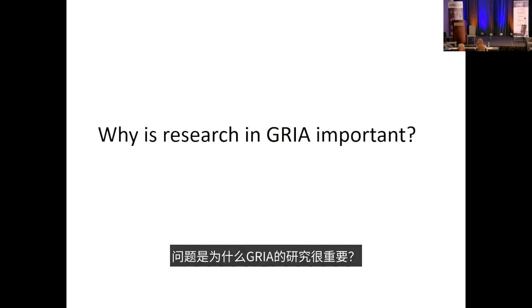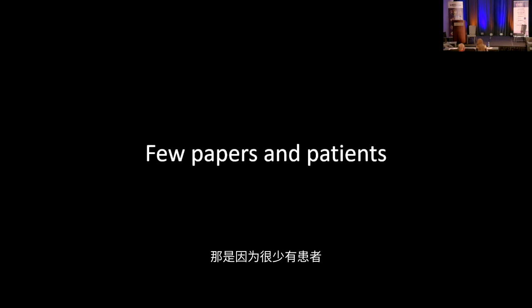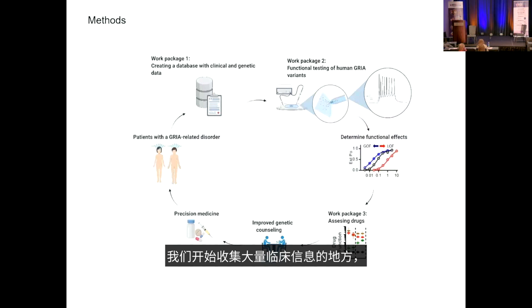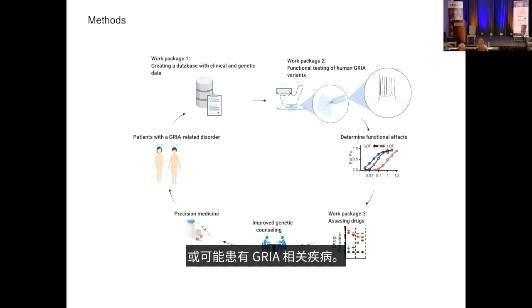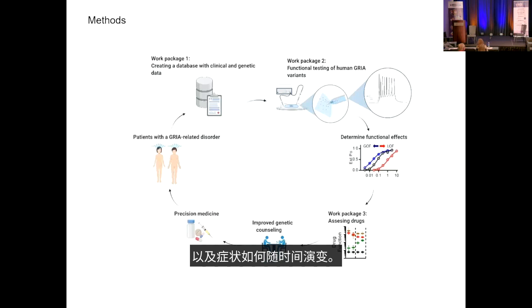Why is GRIA research important? Very limited knowledge exists due to few identified patients and little prior research on human GRIA disorders. The approach: collect extensive clinical information in a registry to understand symptom profiles and how they evolve over time, then study the mutations in the laboratory.